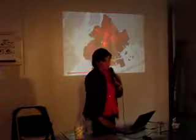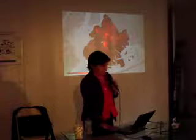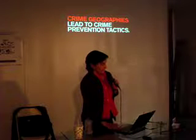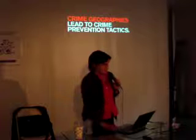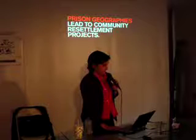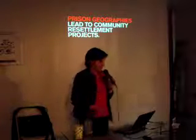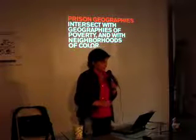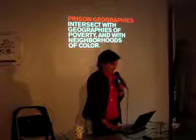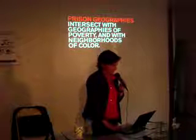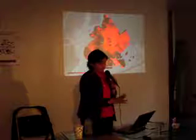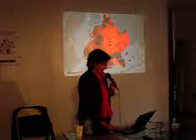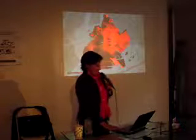This is the density map of prison admissions, while this is a density map of non-violent crime. From our point of view, crime geographies lead to crime prevention tactics like sending police out onto the streets and spending more public dollars, while prison geographies lead to what might be called community resettlement projects. When you look at it that way, you have to confront the fact that prison geography intersects with geographies of poverty and with neighborhoods of color. Brooklyn is our case study — this is the state of people of color in Brooklyn.